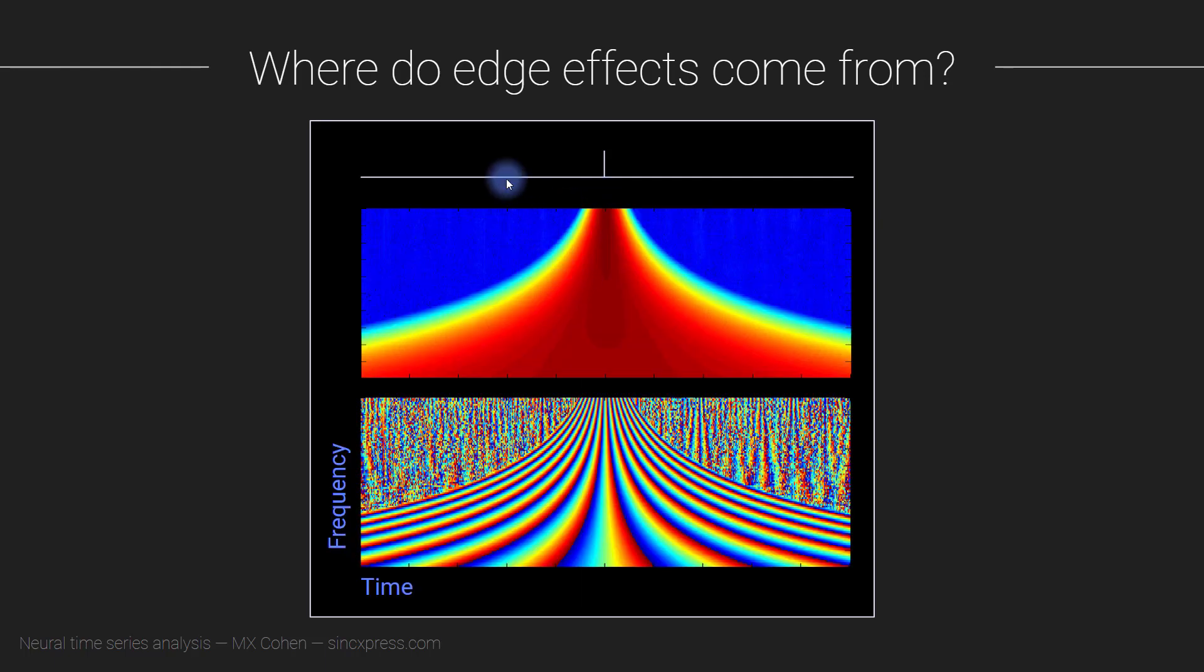So here what you see is the time domain signal here, and this is time frequency power and time frequency phase of this edge. So it's pretty remarkable that there's nothing happening in the signal except for this one little blip, and look at this ginormous time frequency response that it generates. So you can imagine if something like this is in your data, then you're going to get this.